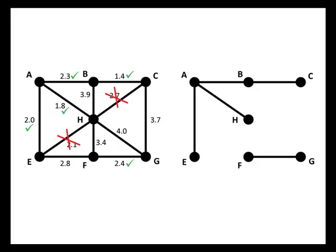The next cheapest edge is the edge from E to F, costing 2.8. And now when we look on the right hand graph, we can see that we really do have a spanning tree. We've got every vertex connected to every other vertex along the network. And so we're done.